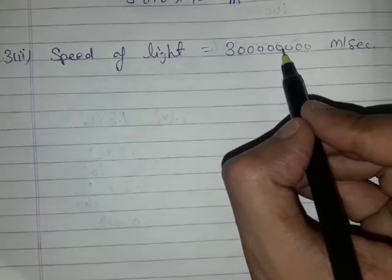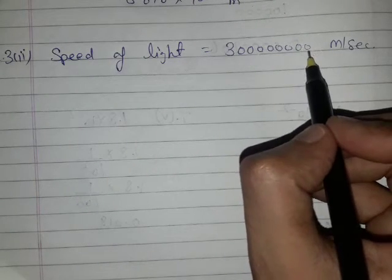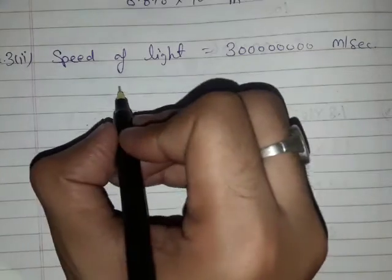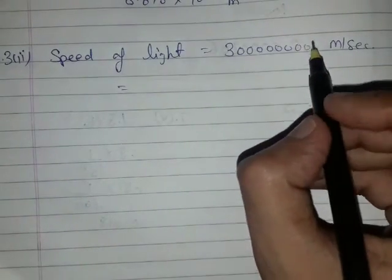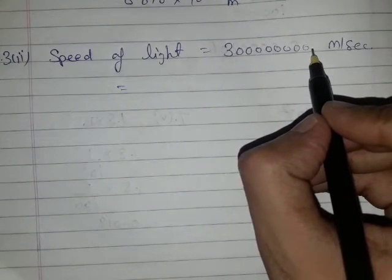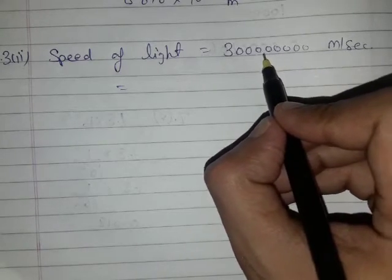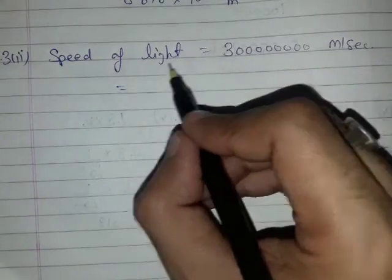We can also count it like this: that we have to shift the decimal point one, two, three, four, five, six, seven, and eight digits to the left side.